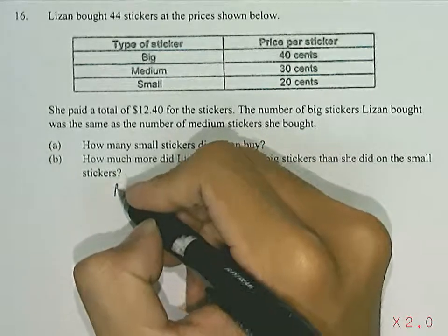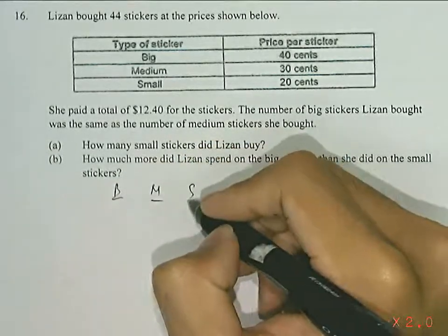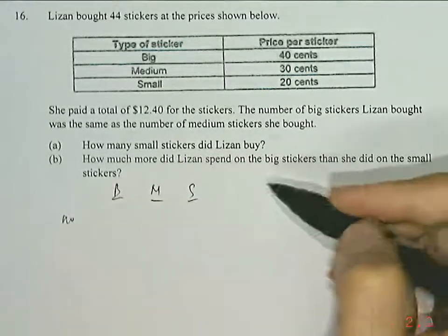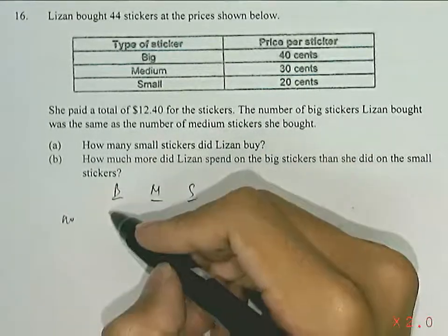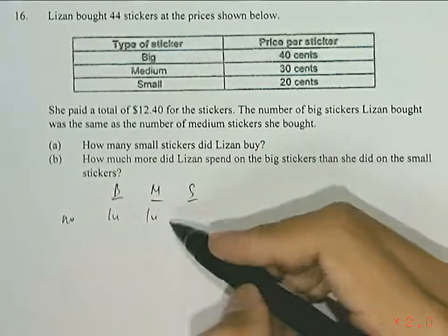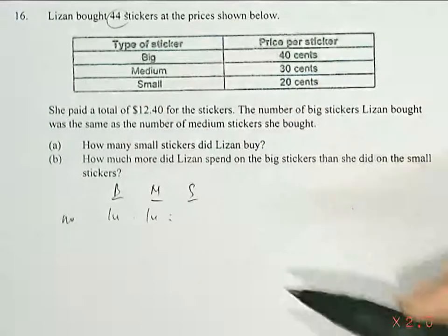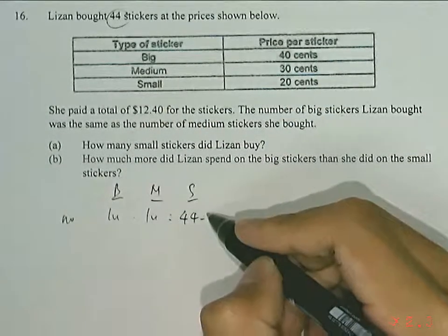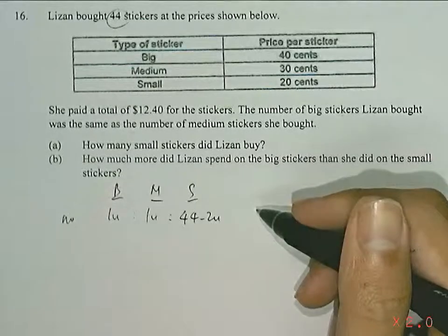So here we have the big stickers, the medium stickers, and the small stickers. In terms of the number of stickers that she bought, since the big stickers and medium stickers are equal, we can let them have one unit of big stickers and one unit of medium stickers. Altogether she bought 44, so the small stickers would then be 44 subtracting off the two units of big and medium stickers.